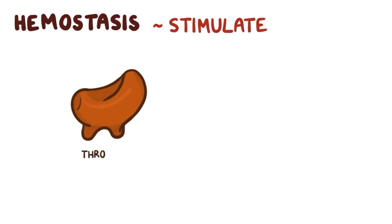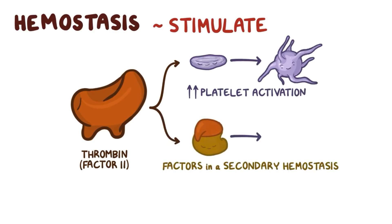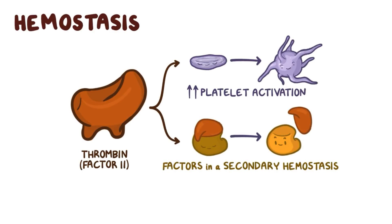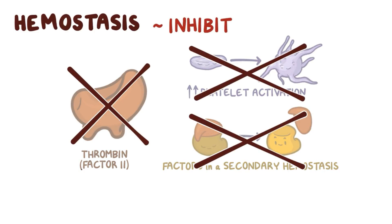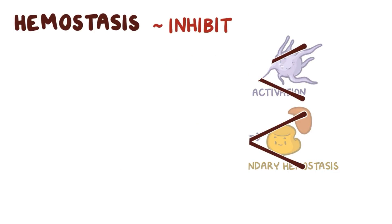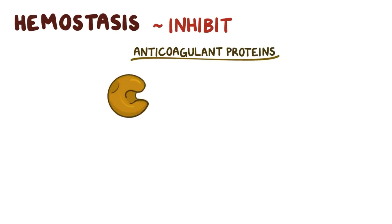Hemostasis can be both stimulated and inhibited by several factors. One way to stimulate hemostasis is with thrombin or Factor II, which increases platelet activation and cleaves several factors involved in secondary hemostasis to their active form. So one way to inhibit hemostasis is actually to inhibit thrombin.